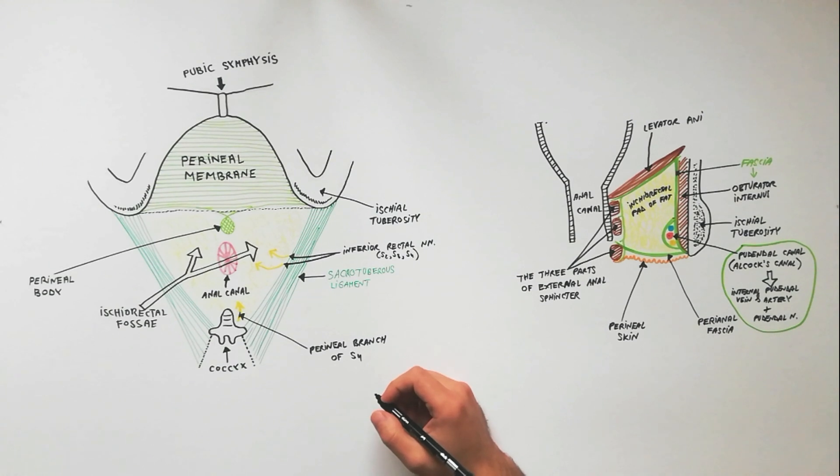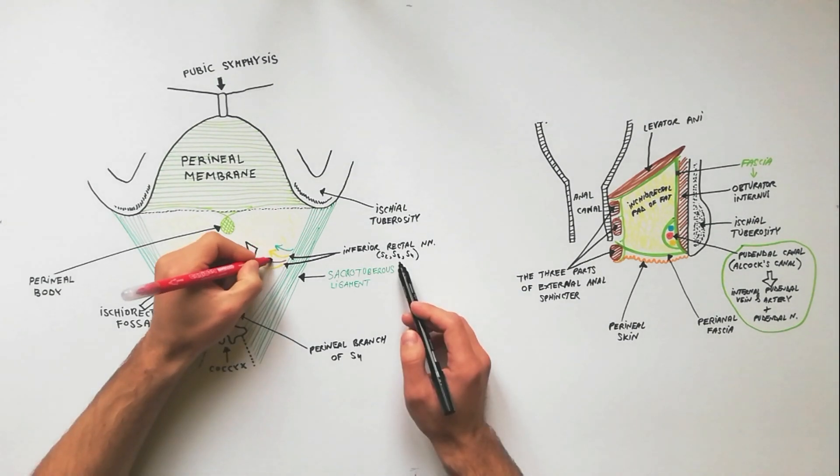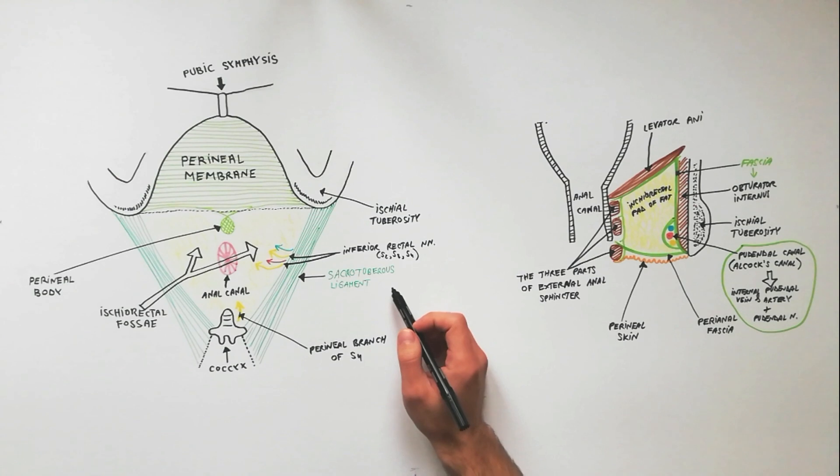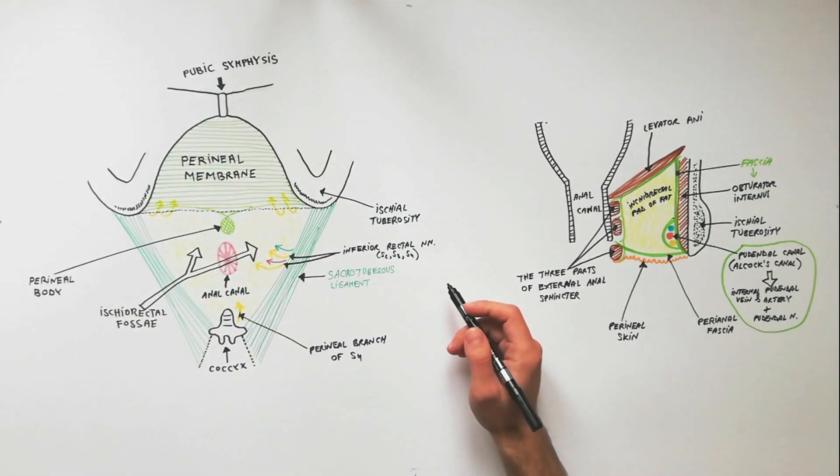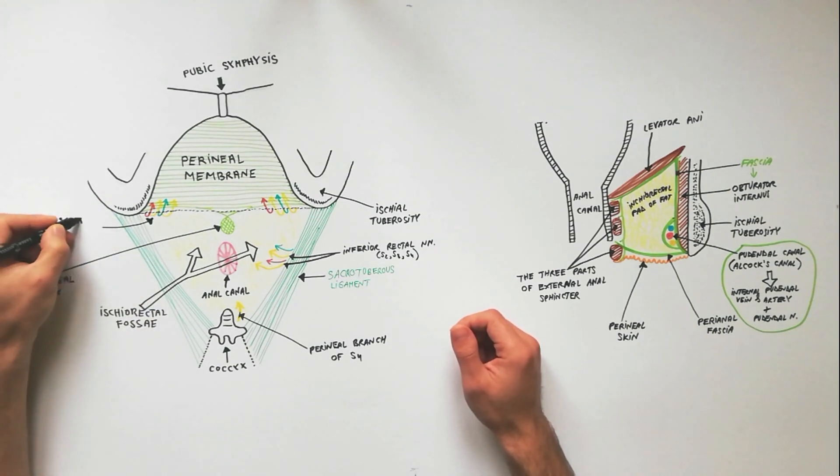Already indicated on the first drawing, contained within the ischiorectal fossa are the inferior rectal nerves and vessels and the perineal branch of the fourth sacral nerve. The posterior scrotal or labial nerves and vessels cross the anterolateral part of the fossa to enter the urogenital triangle.